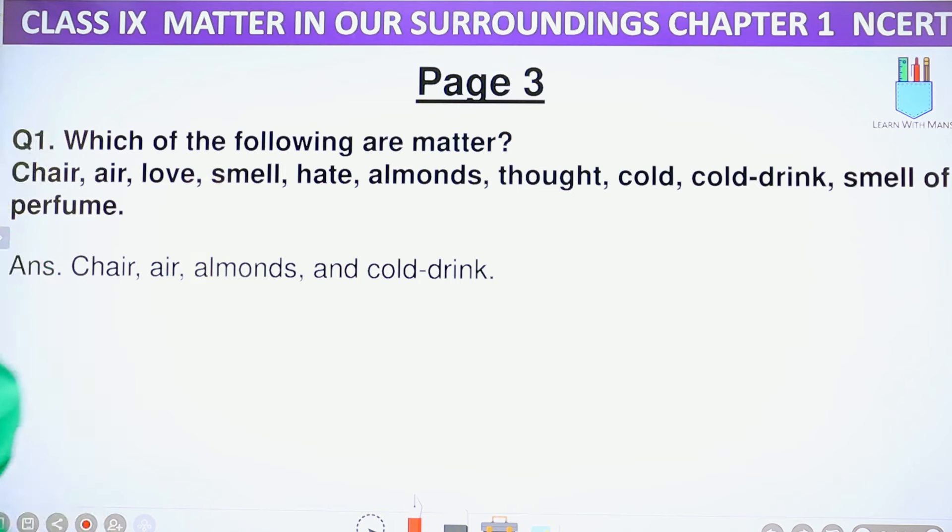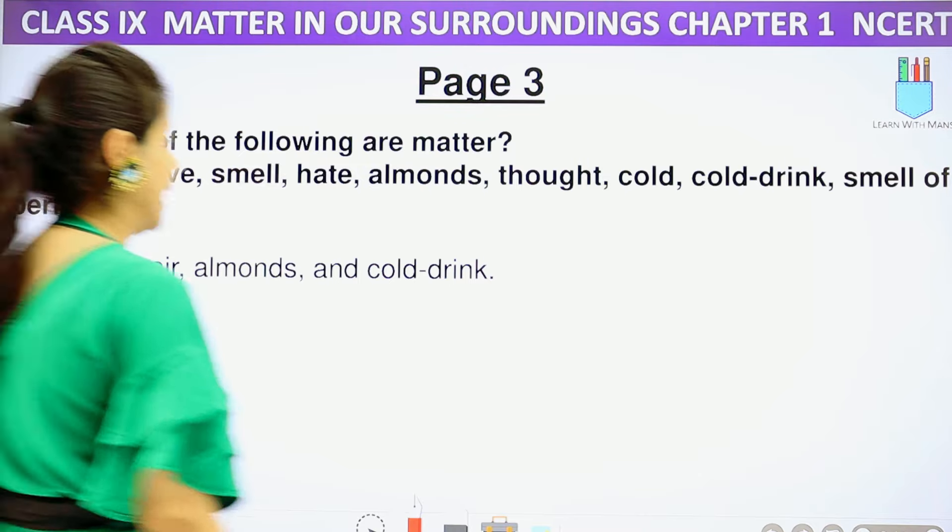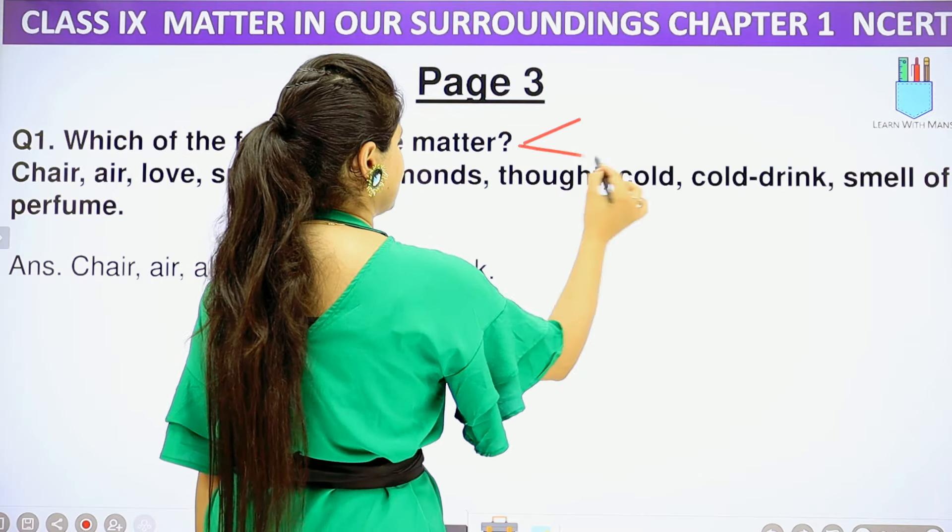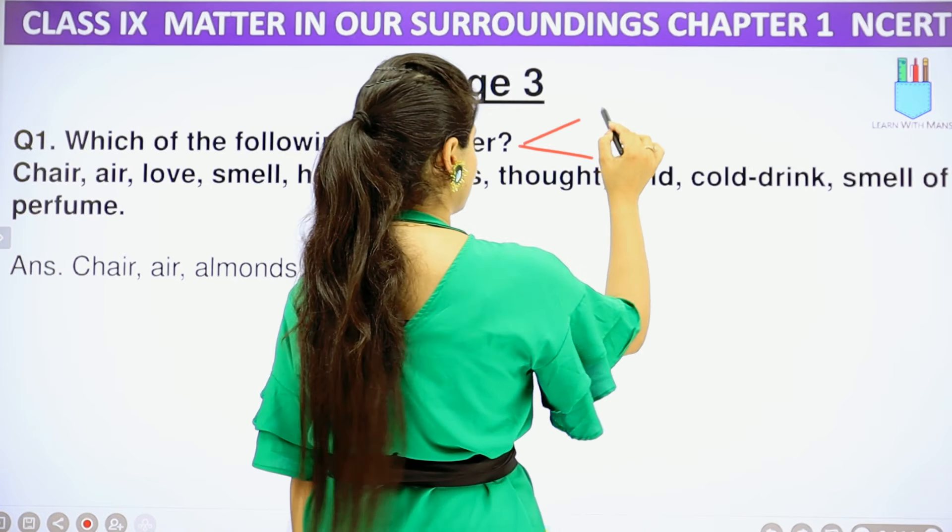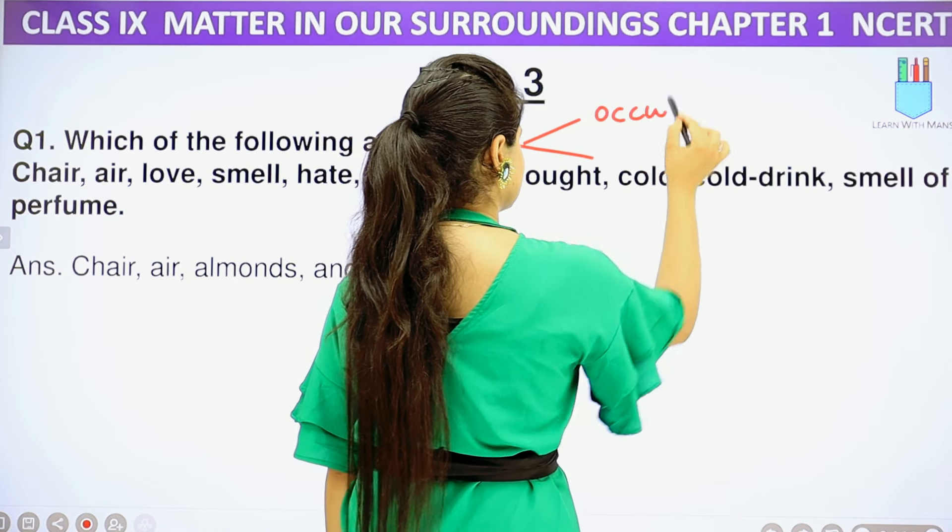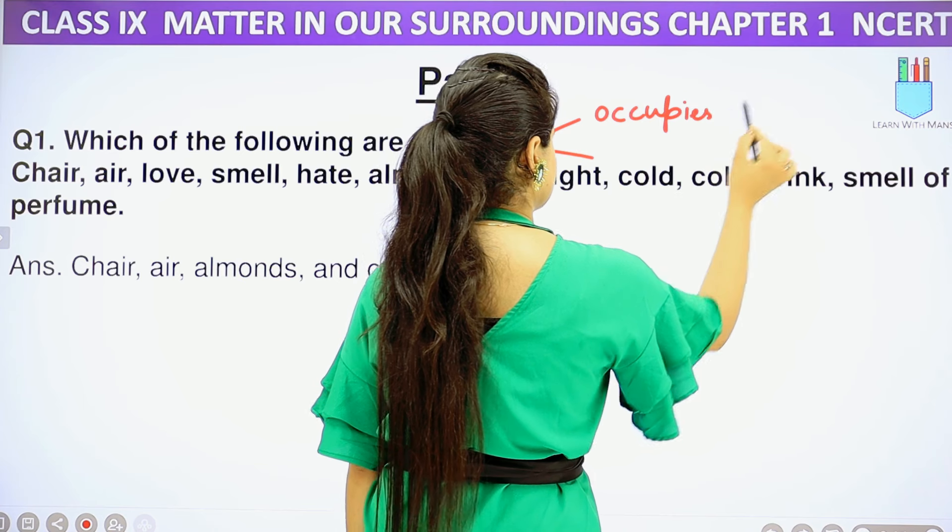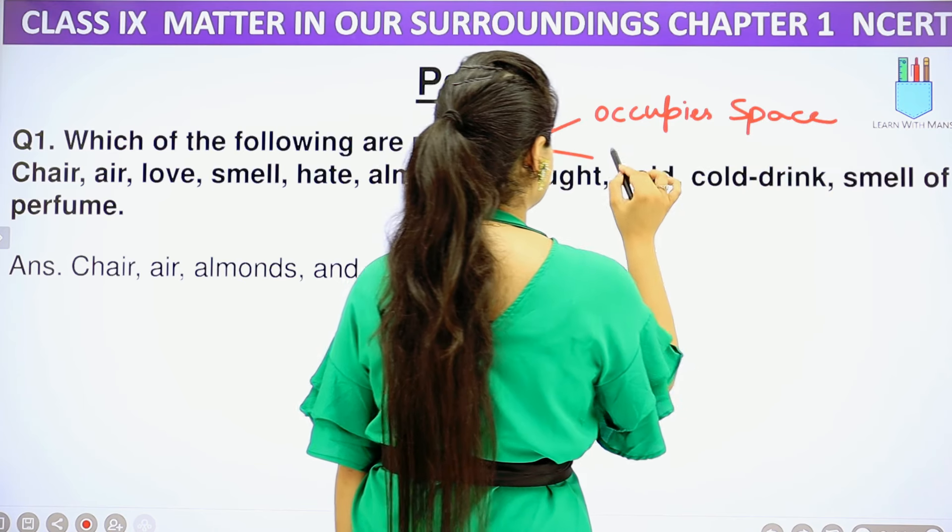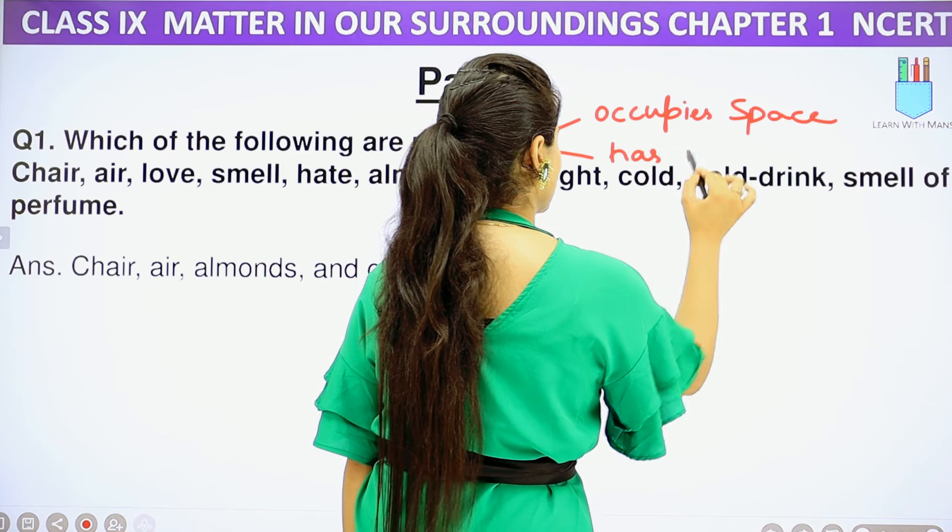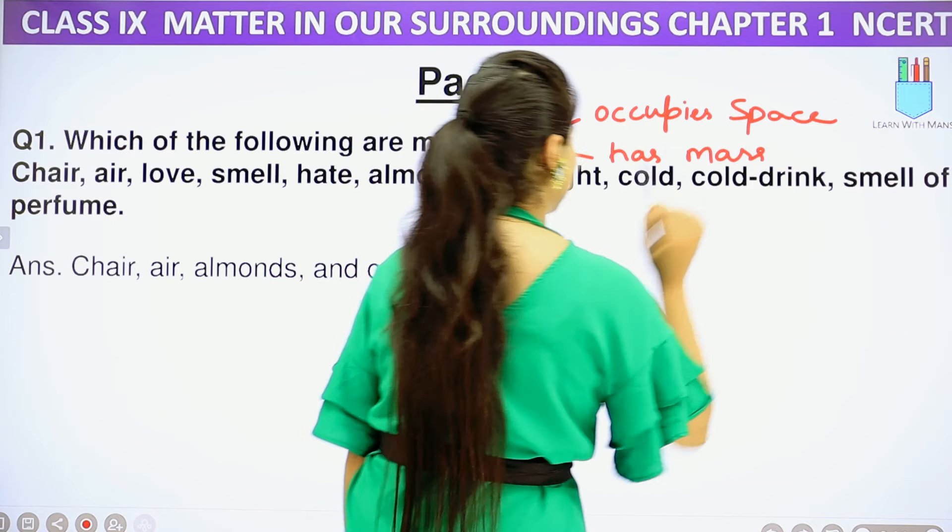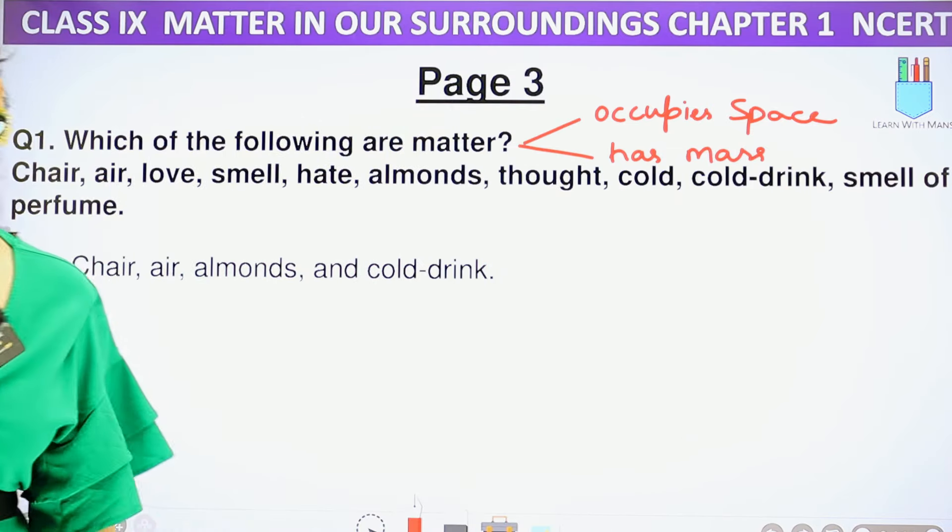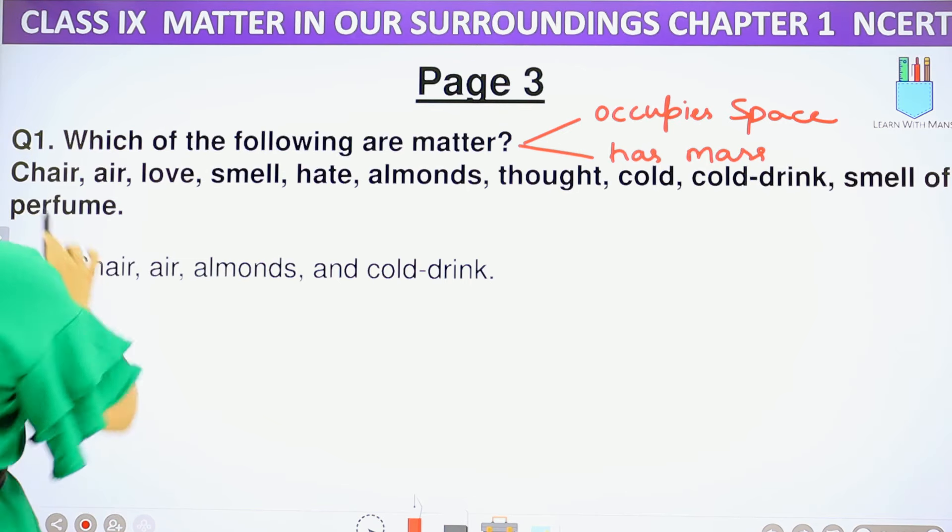So which of the following are matter? First it is a basic question, which is matter and which is not. For matter, I have told you two things: if it occupies space and it has mass. So any matter which has mass and occupies space is matter. Chair has mass and occupies space? Yes, chair is matter.